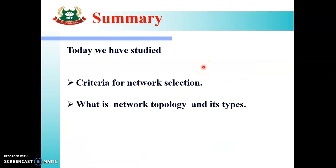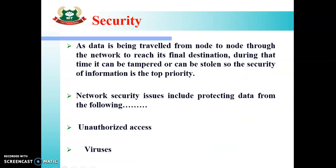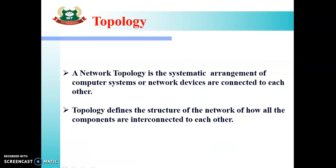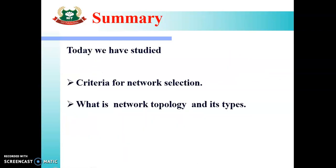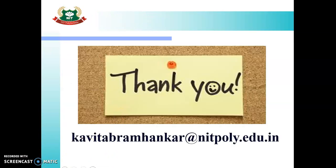Let us summarize today's lecture. Today we studied the criteria for network selection — there are three factors: Performance, Reliability, and Security. We also saw what topology means: the arrangement of computer systems and network devices connected to each other is called network topology. We saw six types of topologies: Bus, Ring, Star, Mesh, and Hybrid. I hope you have understood today's lecture. Thank you for watching the video. Keep learning and enjoy learning. Thank you.